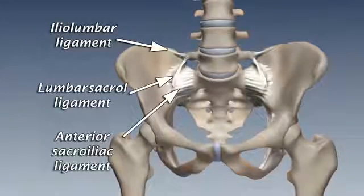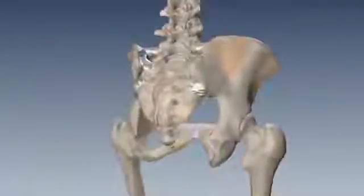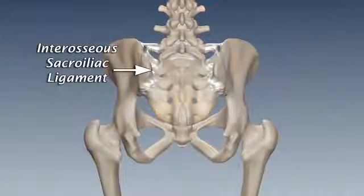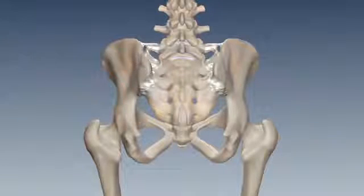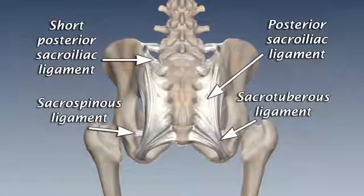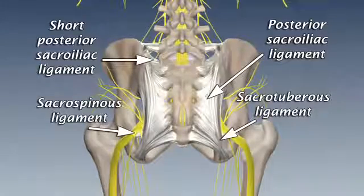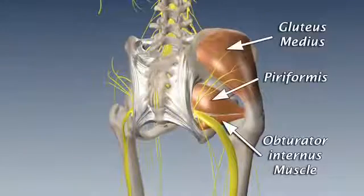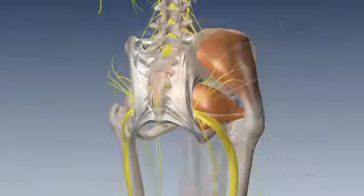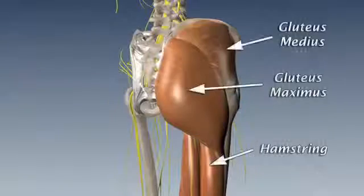Those structures that produce joint compression include the interosseous ligaments and the joint capsule, including strong posterior ligaments protecting the network of adjacent nerves. In addition, a number of muscles contract and co-contract to provide stabilization for the SI joint during movement. The sacroiliac joint, as a joint, just like any other joint in the body,